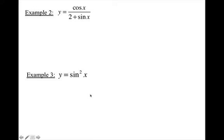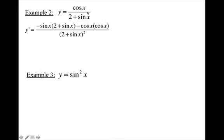I want you to see if you can do example 2 on your own using the quotient rule, and try example 3 — you have to use the chain rule. Go ahead and press pause. Alright, let's see how we did. Quotient rule: derivative of the top — derivative of cosine is negative sine x — times the bottom, minus the top cosine times the derivative of the bottom. Derivative of 2 is 0, derivative of sine is cosine, all over the bottom squared.